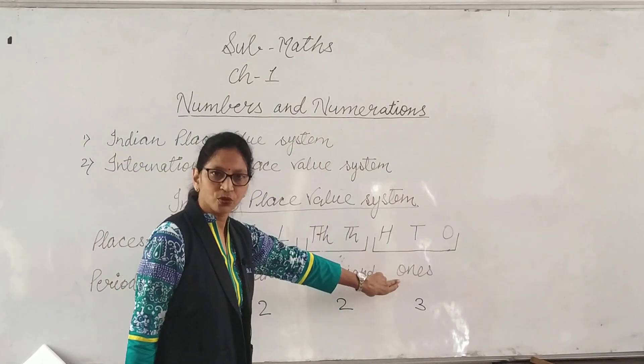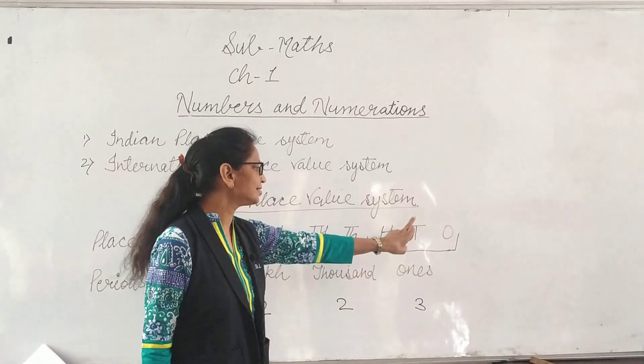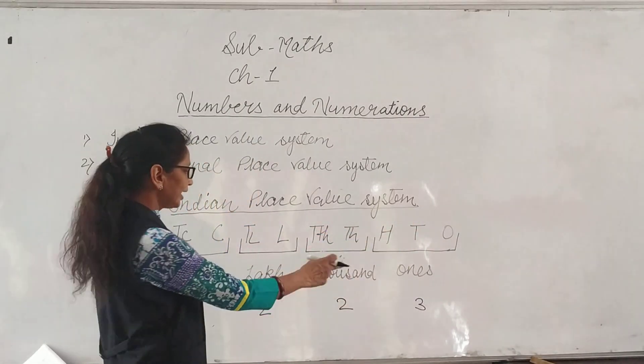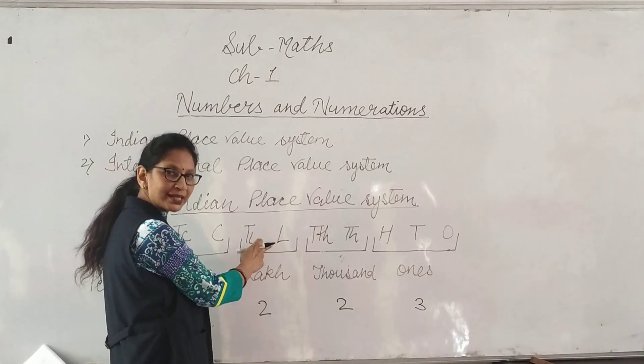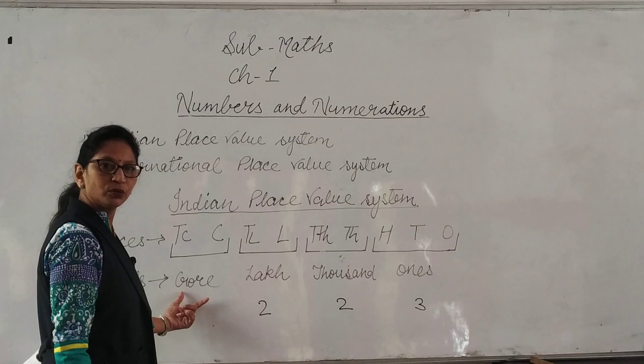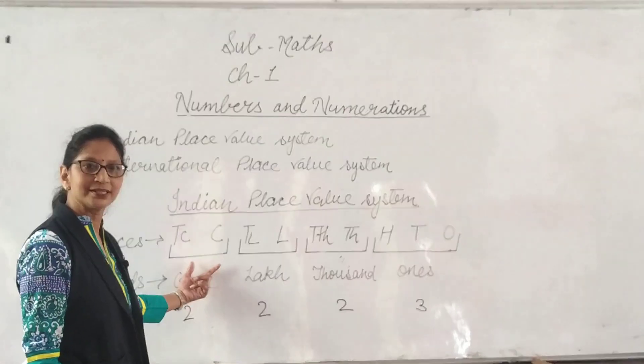You can see, in one's group, 3 places are there: ones, tens, and hundreds. In Thousand group, two places are there. In Lakh group, two places are there. And Crore group is also two places are there.